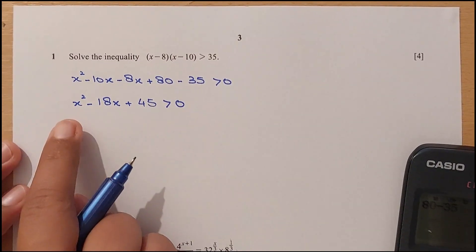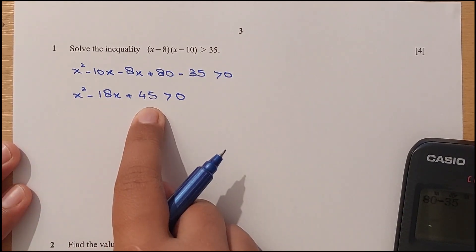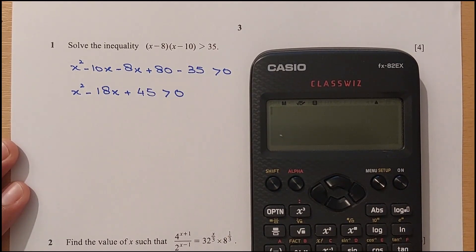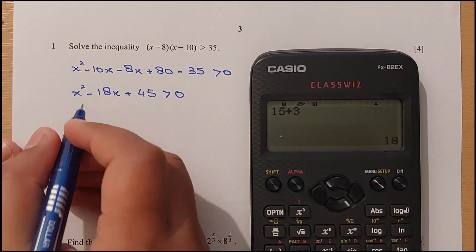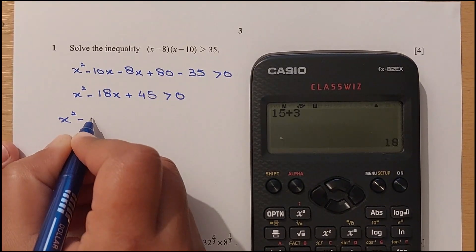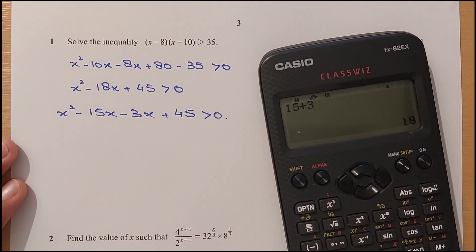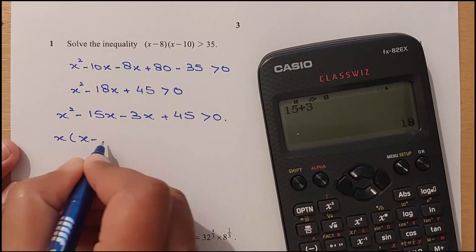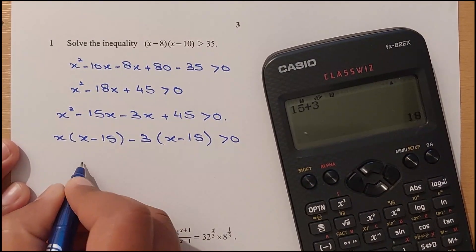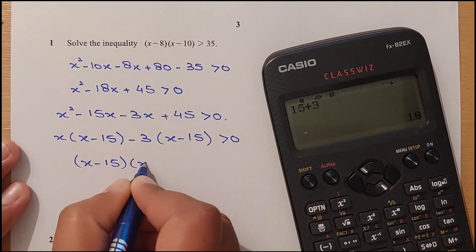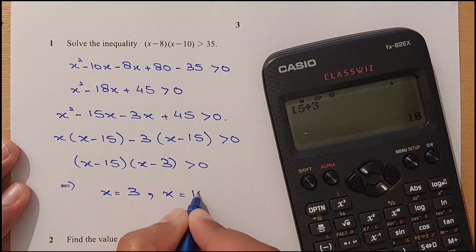We have to find the factors — it's a quadratic equation in the variable x. So 1 times 45 is 45; the factors of 45: we have 3 times 15 is 45, and 15 plus 3 is 18. So x squared minus 15x minus 3x plus 45 is greater than 0. Taking x common, we have x minus 15, and negative 3 common gives x minus 15 greater than 0. The two factors are x minus 15 and x minus 3 greater than 0, so x equals 3 and x equals 15.